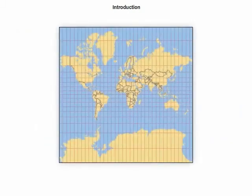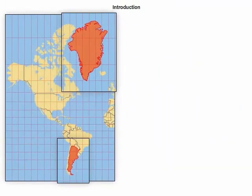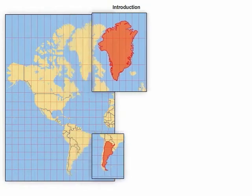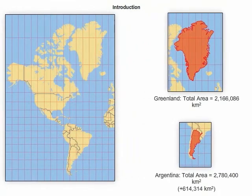For example, Greenland and Argentina are of similar size, but in this common map projection, Greenland appears larger. This is an example of distortion.